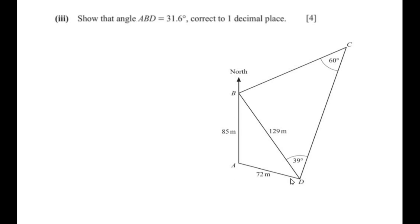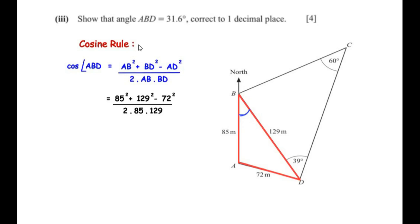Next, show that angle ABD = 31.6 degrees. We consider triangle ABD where all three sides are known and we need a missing angle, so we use the cosine rule: cos(ABD) = (AB² + BD² − AD²) / (2 × AB × BD).